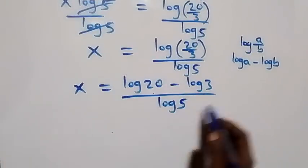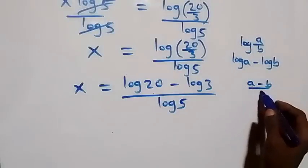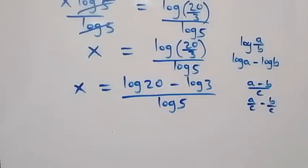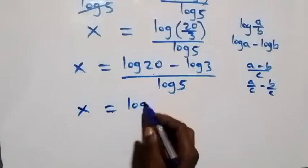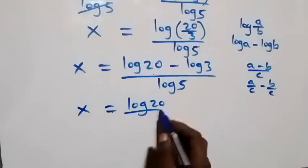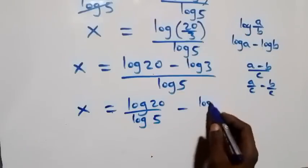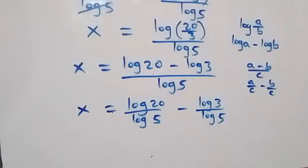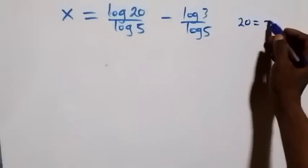Here we can separate this fraction into two fractions. Since a minus b over c is the same thing as a over c minus b over c, what we have here becomes x equals to log 20 over log 5, minus log 3 over log 5. We can also write 20 as 5 times 4.